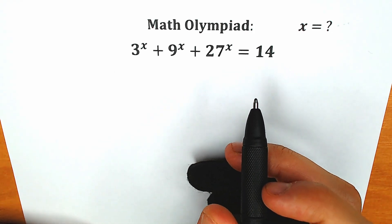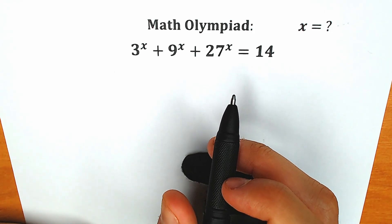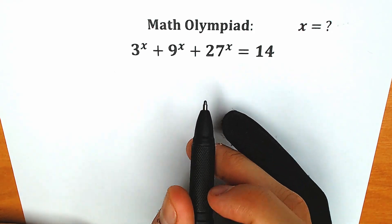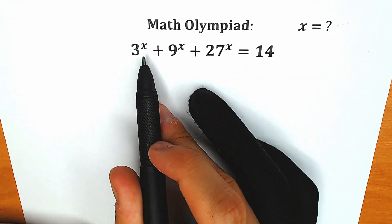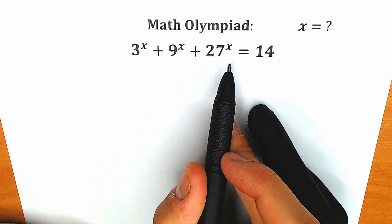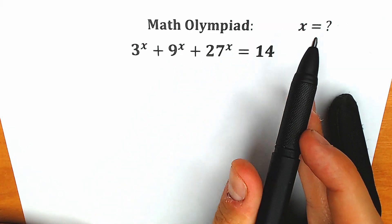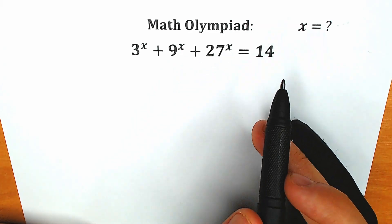Hello everyone. Happy to see you here. Welcome back to my channel, Hire Mathematics. Today we have a great question: 3 to the x plus 9 to the x plus 27 to the x equals 14. We need to solve this question for x.